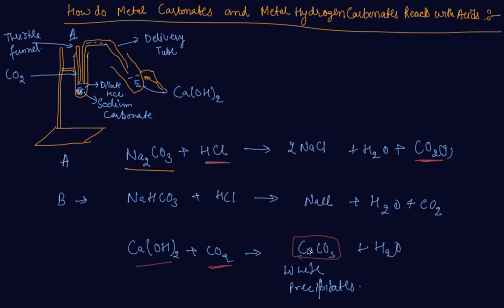So this shows that the carbon dioxide gas is released when carbonates of metals and metals hydrogen carbonates react with acids. So students kindly note in mind that when acids and bases react with metal, they form hydrogen gas. But when metals carbonates and metals hydrogen carbonates react with acids, they form carbon dioxide gas.